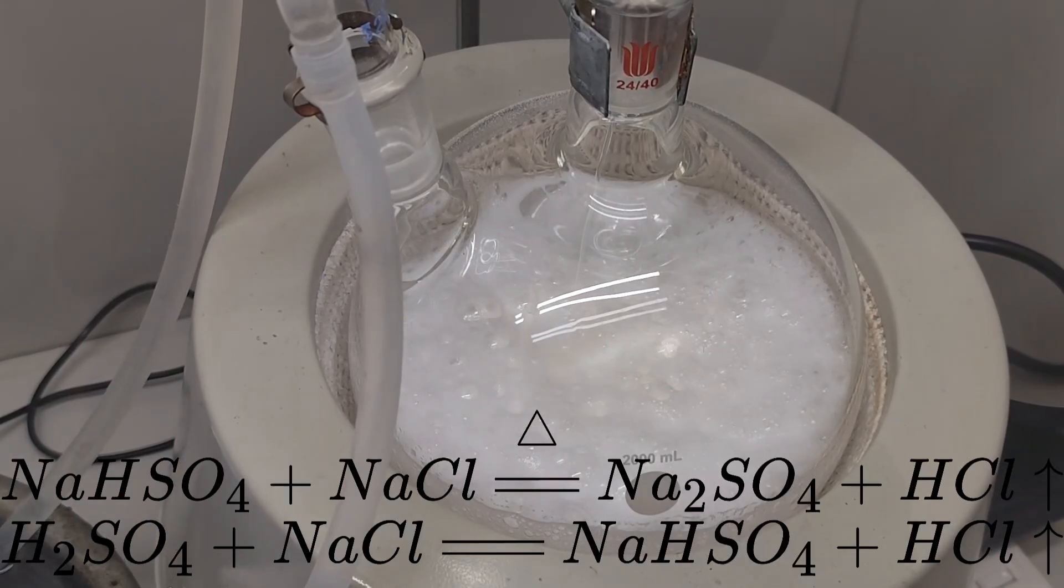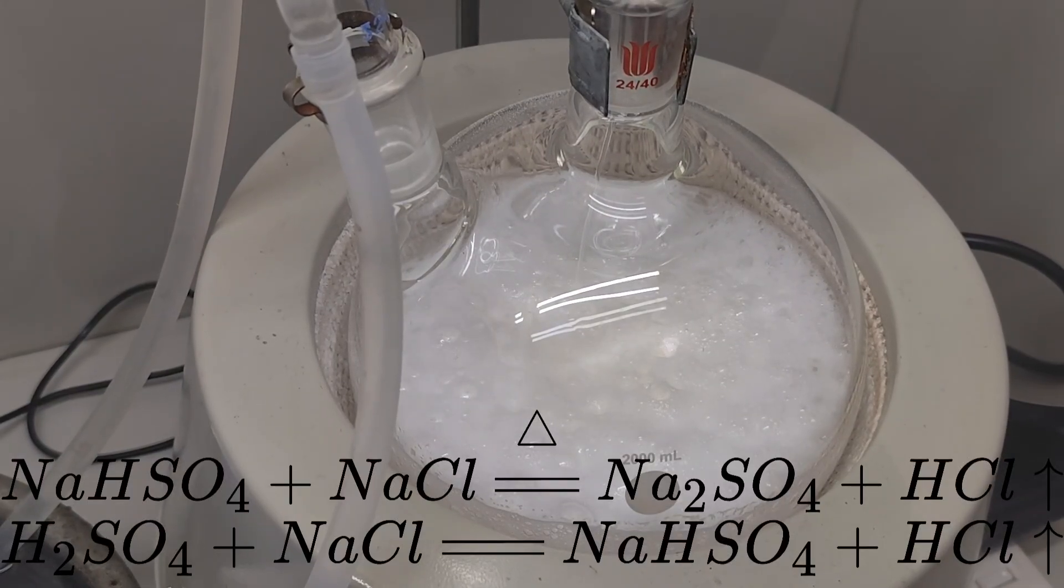However, the sodium bisulfate would dehydrate to form sodium pyrosulfate at this temperature. Therefore, adding sulfuric acid according to the second chemical equation is an unwise choice. I plan to add 30% excess sulfuric acid.